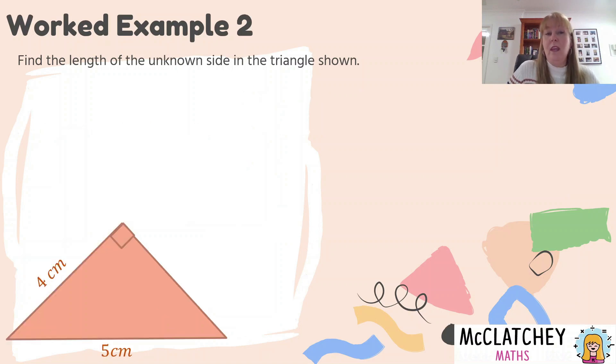Okay, worked example two. This time, so we've already found the hypotenuse in the last question, we're going to find one of the other sides, the smaller side. Most textbooks will split this kind of thing up into two different exercises. They'll have the first exercise just finding the hypotenuse. The second exercise will be finding smaller sides. I'm going to show you how to do both today. Okay, so we're going to find the unknown side. It's the same steps as before. Step one, write the formula, c² = a² + b². Now remember what I said earlier, c is always, always the hypotenuse.